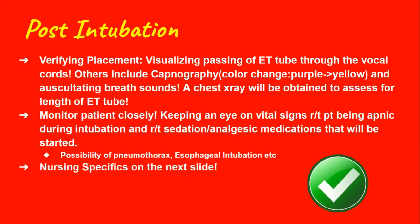Now let's talk about post-intubation. The main way to verify placement is visualizing the tube pass through the cords. However, to double verify, a small square CO2 detector is connected — when it detects CO2, it changes color from purple to yellow immediately, signaling that it's in the right spot, as CO2 is what gets excreted from the lungs. Besides that, you also need to auscultate both lung fields to ensure the tube isn't too far down. If the tube is too far down, it's likely to go into the right bronchus.